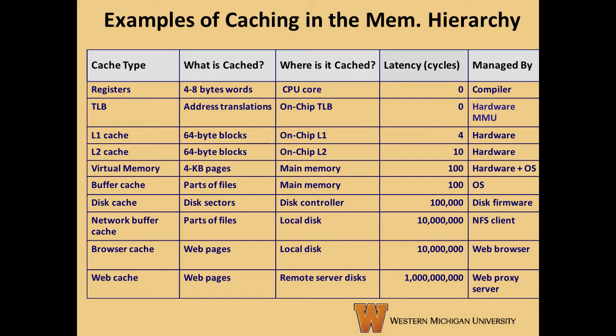This table appears on page 614 of your book, and gives some information on what kind of information is cached by various cache types, and how long they take to access. There are several concepts here that we will be addressing in later videos, so if you're not familiar with some of the terminology, that's okay. The table includes some types of caches we haven't covered yet to demonstrate just how common caches are.